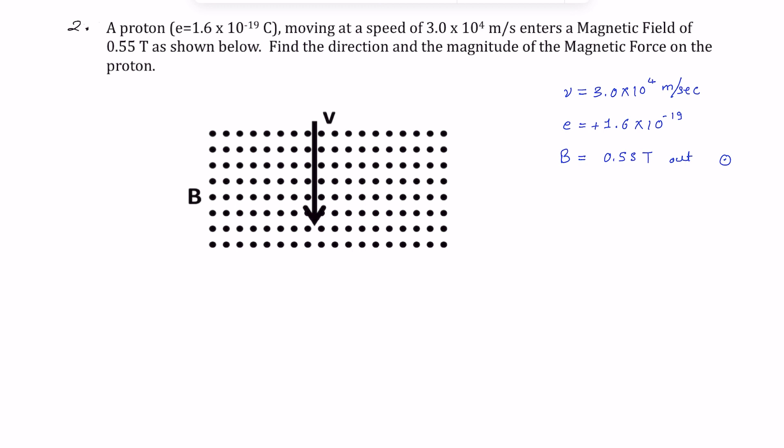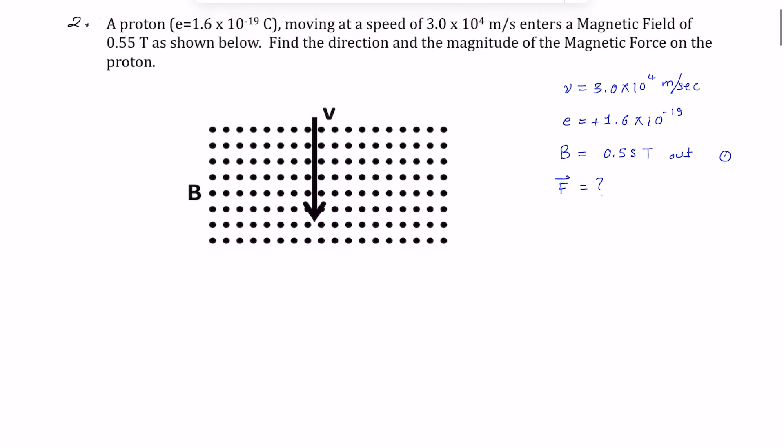So we have to figure out the direction and the magnitude of force. Basically we have to figure out this vector. Now we know that in general, Lorentz force is given by charge times electric field plus V cross B.